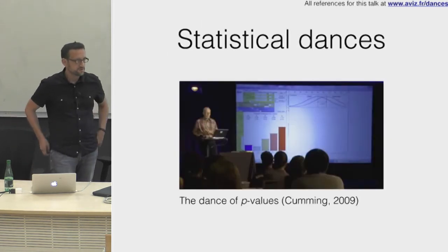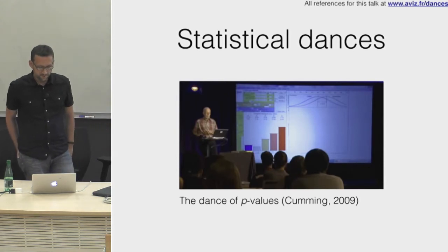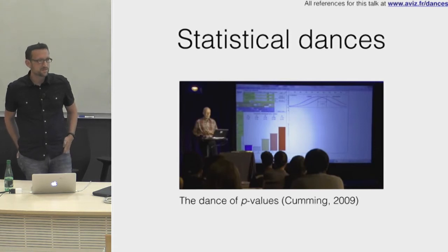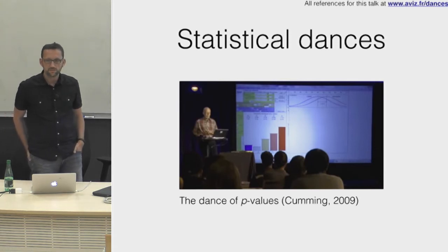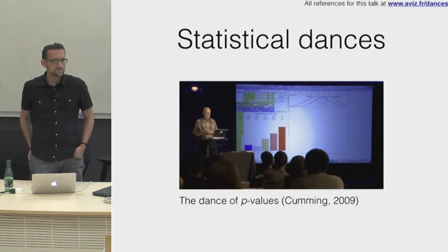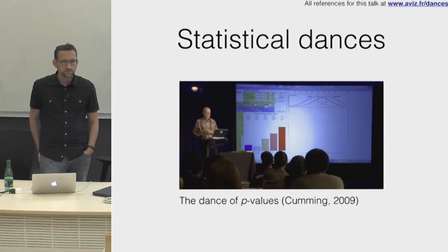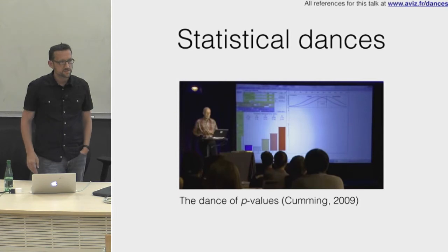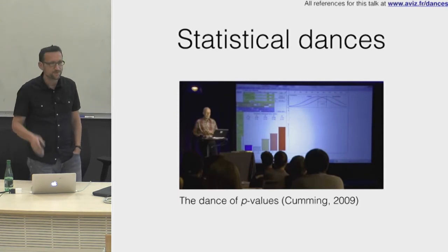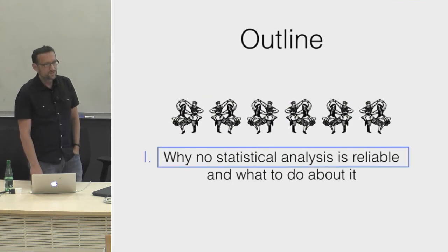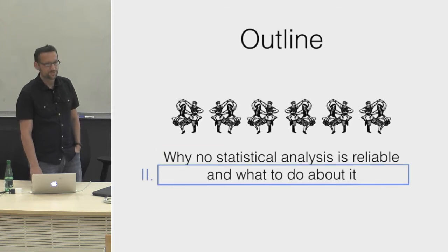Even if we try our best, it's very difficult to understand the uncertainty in our statistical analysis, so we need not only more training but better education and material to help us as researchers. There is a very powerful pedagogical tool I call the 'statistical dance,' popularized by Jeff Cumming, showing that p-values and confidence intervals vary a lot across multiple hypothetical replications of the same experiment.